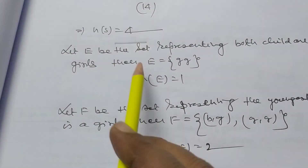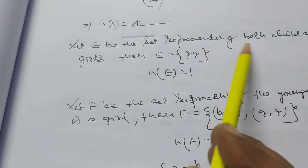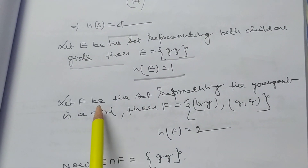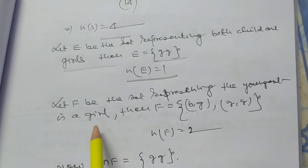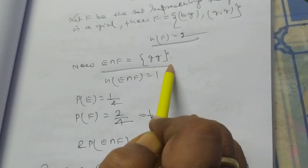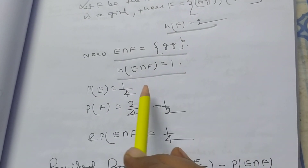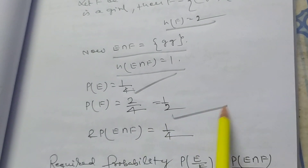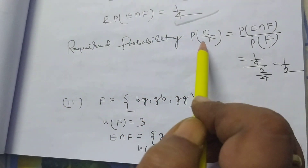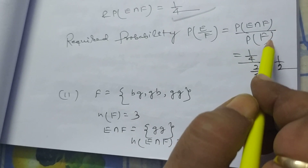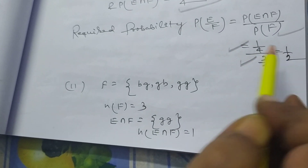The cardinal number of S is 4. Let E be the event that both children are girls, so E = {GG} and the cardinal number of E is 1. Let F be the event that the youngest is a girl, so F = {BG, GG} and the cardinal number of F is 2. E∩F = {GG}, so its cardinal number is 1. P(E) = 1/4, P(F) = 1/2, P(E∩F) = 1/4. The required probability P(E|F) = (1/4)/(1/2) = 1/2.